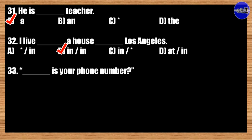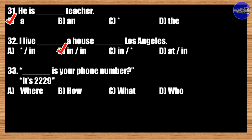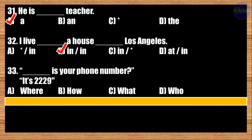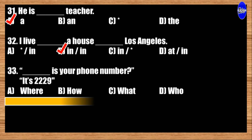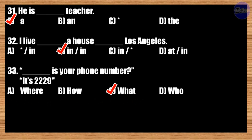Number thirty-three: Blank is your phone number? It's 2229. A: Where; B: How; C: What; D: Who. The correct answer is option C. What is your phone number?